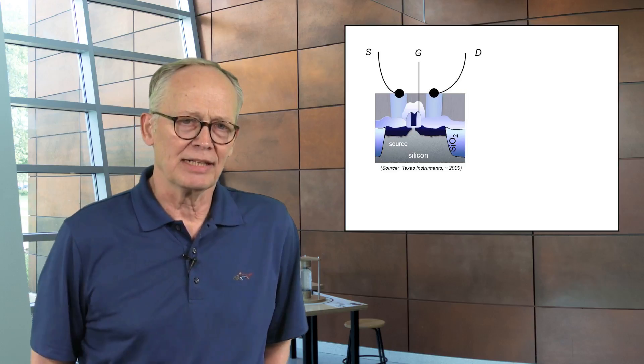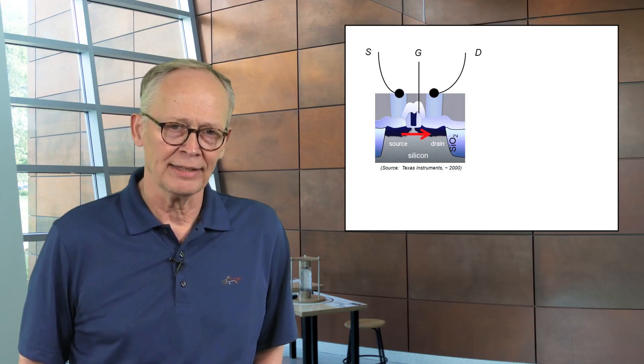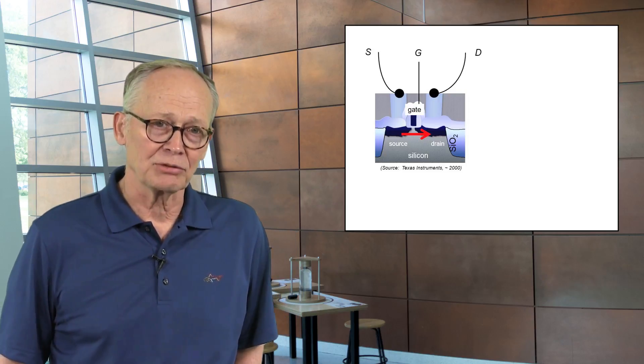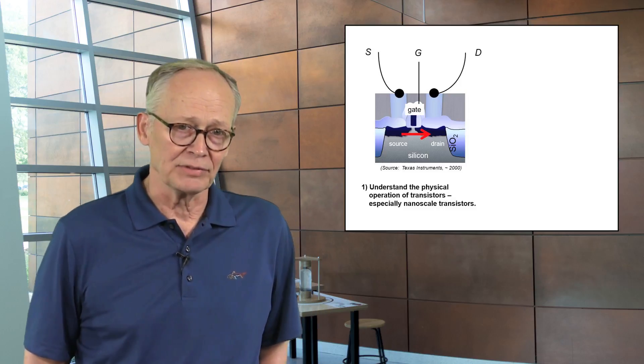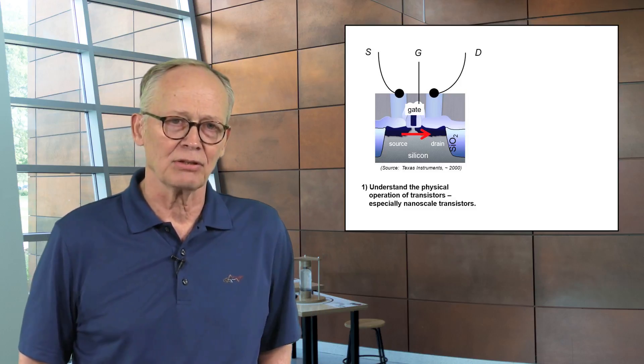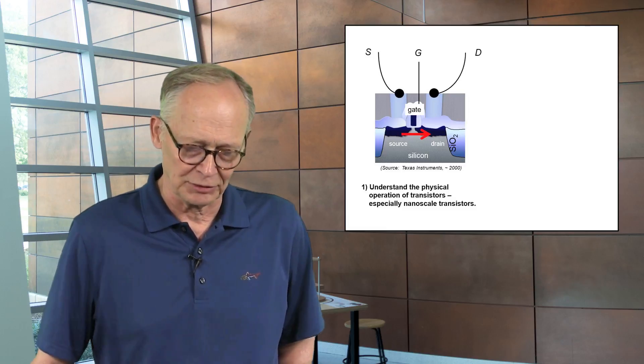There's a region that is a source of electrons. Electrons flow across the transistor, out the drain, under the control of a third electrode we call the gate, which controls their flow. The first objective of this course is to understand the physical operation of this device. How does current flow in response to the voltages we apply to the terminals?